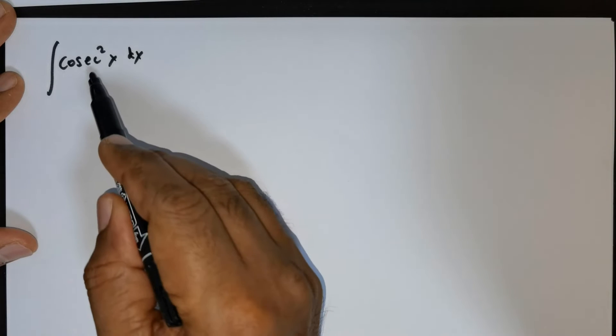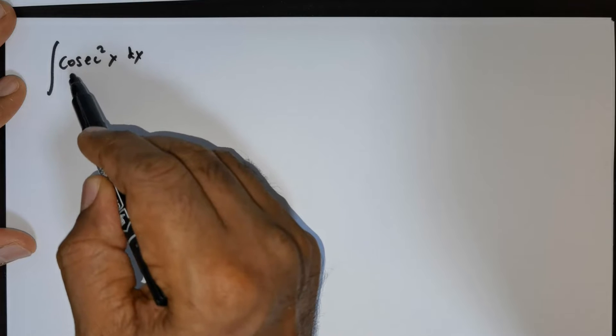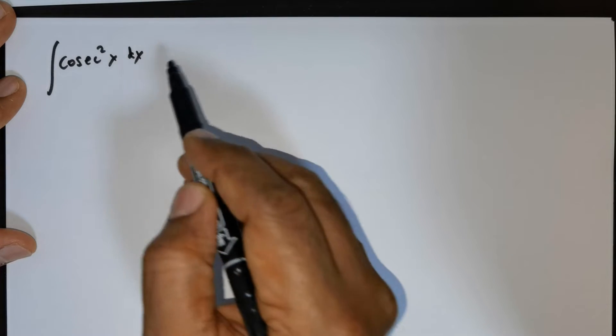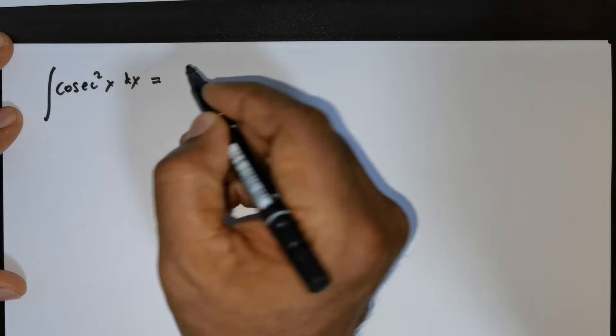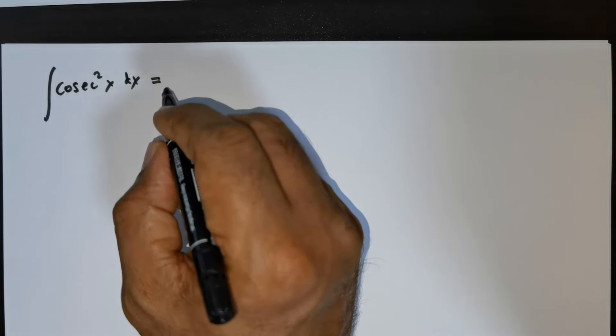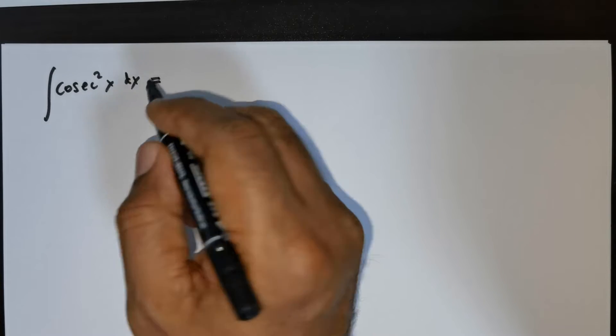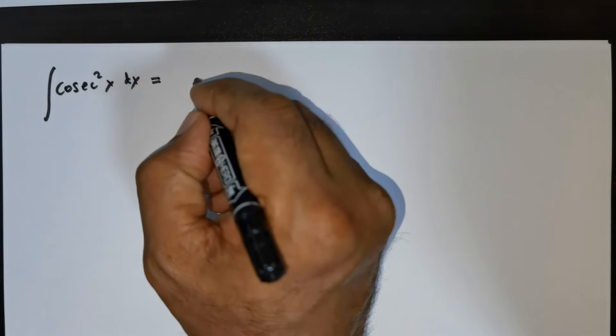Good day everybody. Some students have asked me to obtain the formula for integral cosecant squared x dx, so that's the reason I'm doing this question. This is a simple question but the proof requires attention.